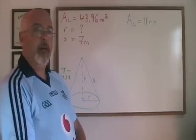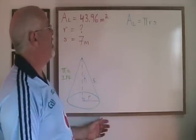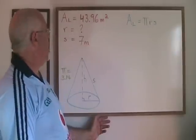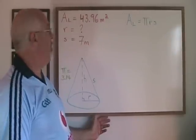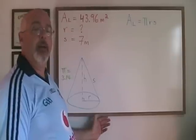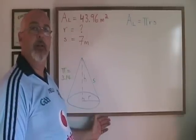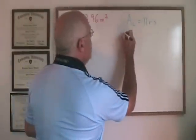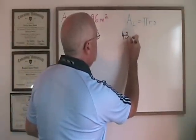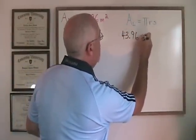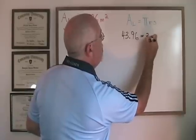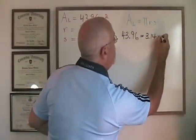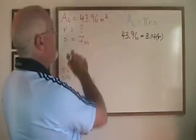Here is an example where we are given the lateral area, 43.96 meters squared, and the slant height, 7 meters, and we are asked for the radius. Again, this is a matter of plugging the values into the formula and simplifying. AL is replaced by 43.96, pi is 3.14, r is the unknown, and s is 7.